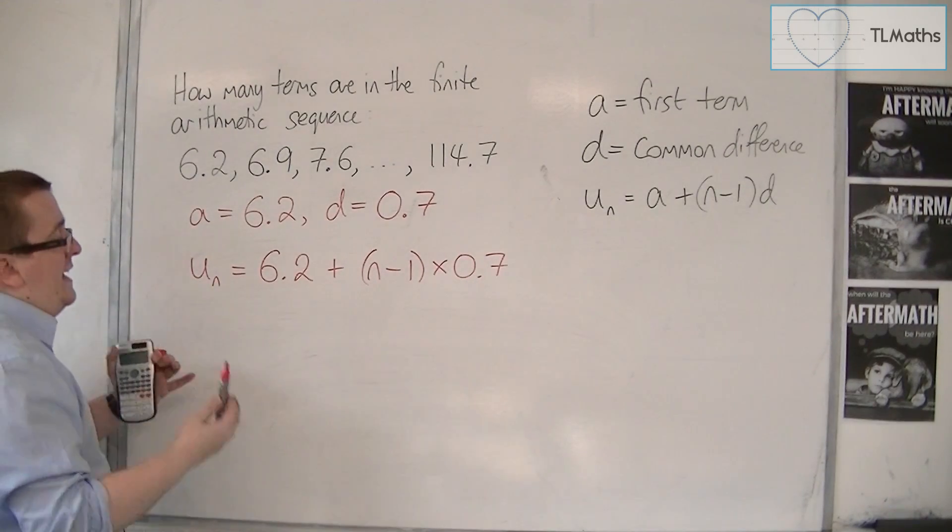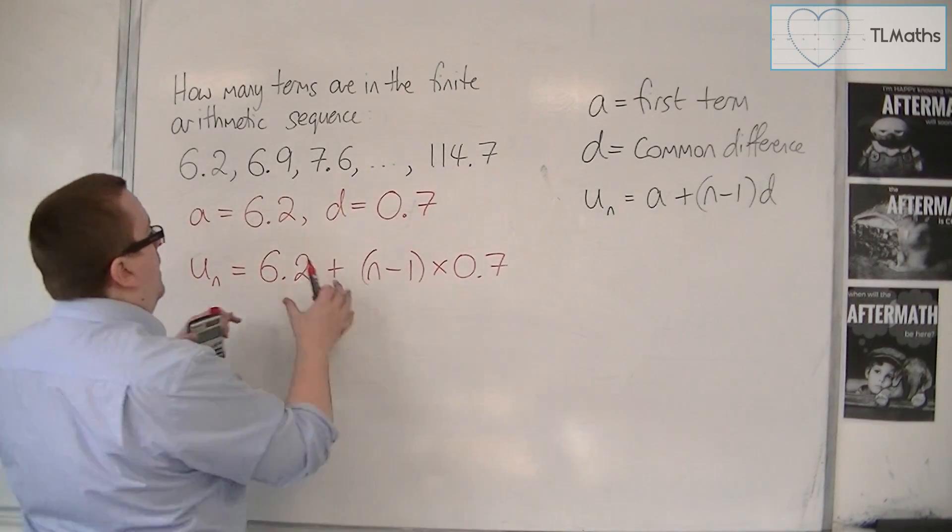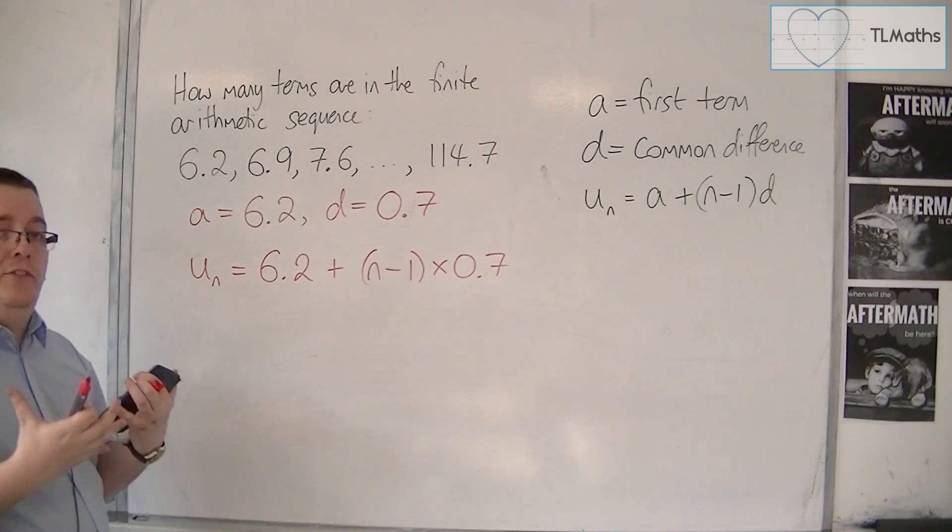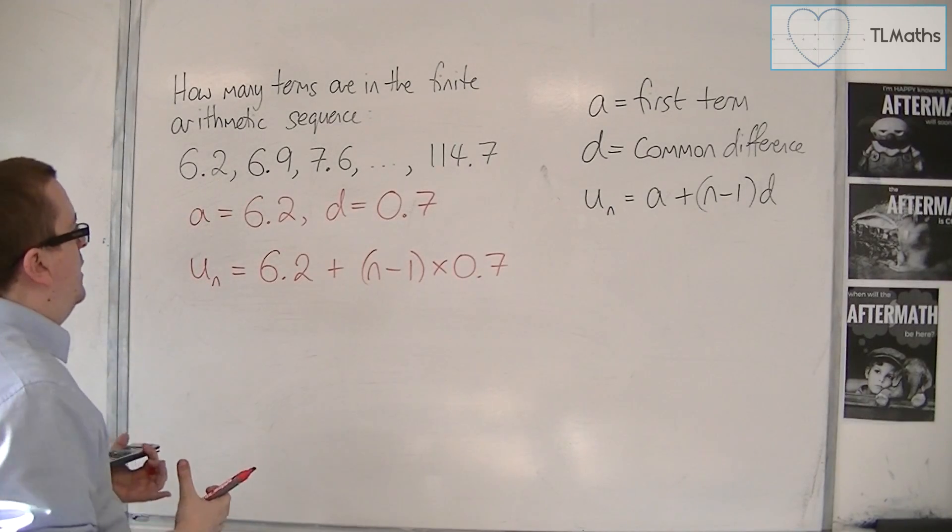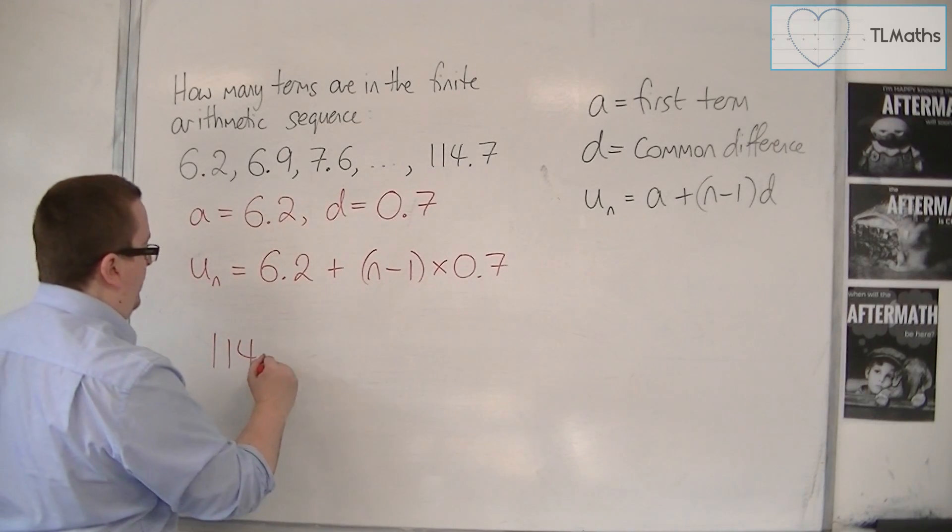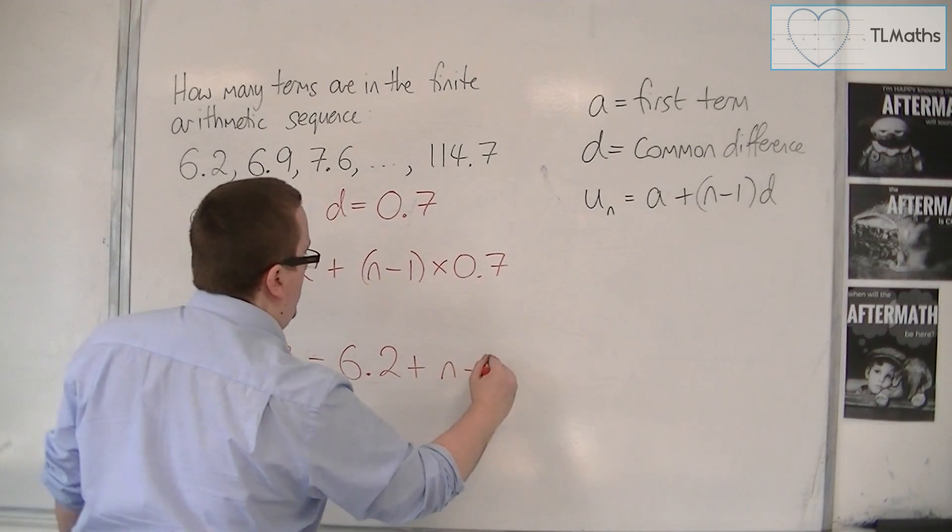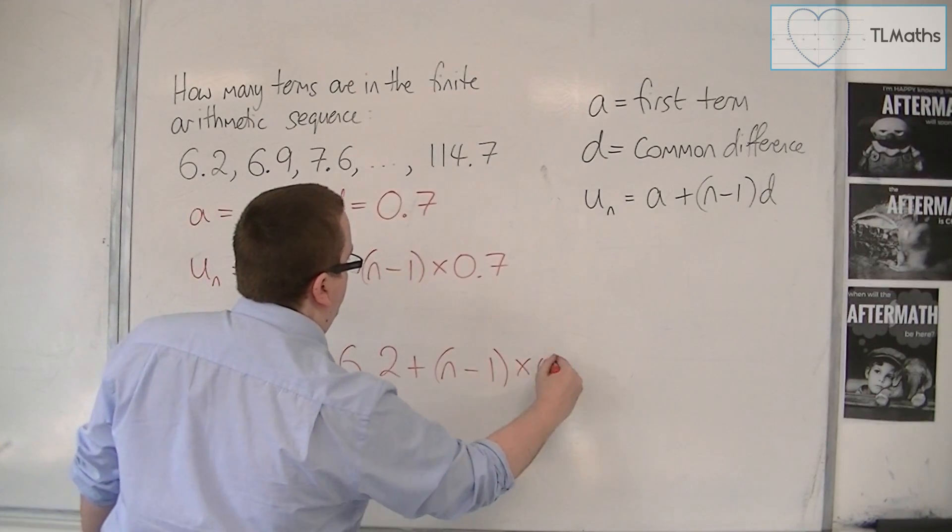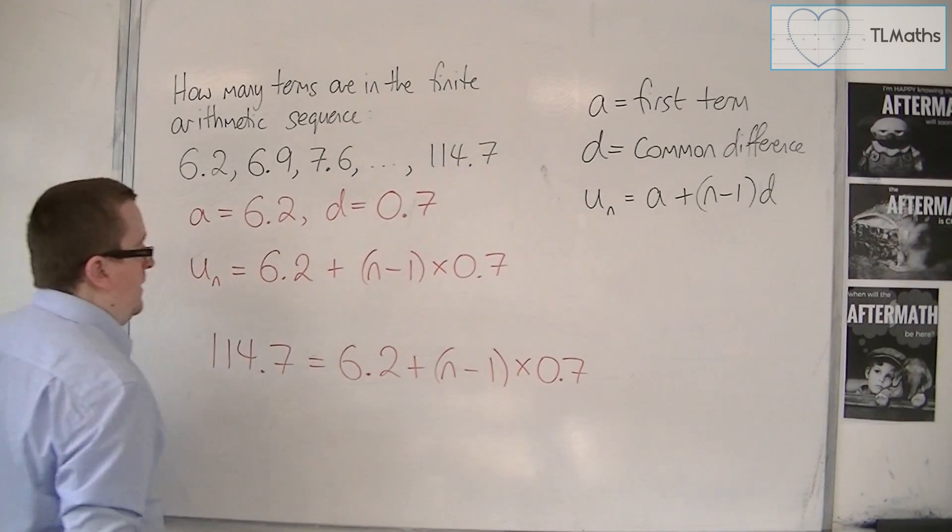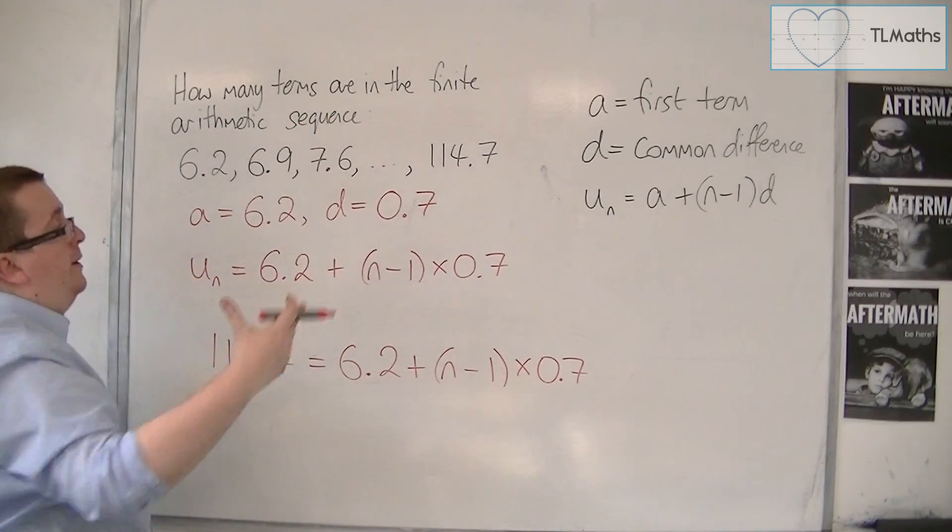So there is some n such that 114.7 is the last term there. So if I put this equal to 114.7, it'll tell me the value of n that I need - that value of n that gives me the number of terms in this sequence.